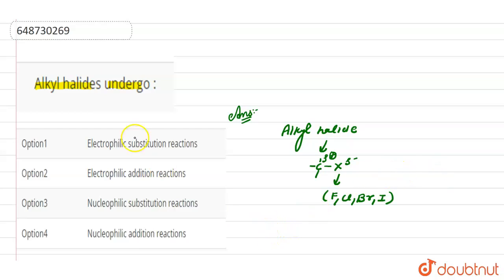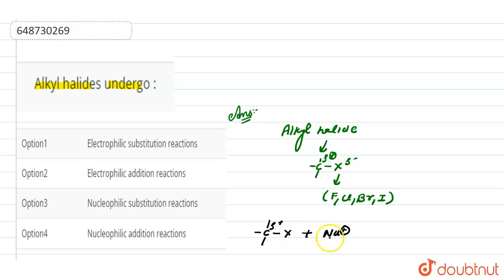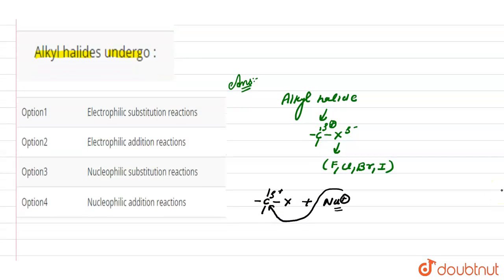Here we have this alkyl halide group and there is an electron-rich nucleophile. The partial positive charge on this carbon atom makes it susceptible to attack by any electron-rich group, that is called a nucleophile. This nucleophile will attack on this carbon. Thus we can say that the alkyl halide undergoes nucleophilic substitution reaction.